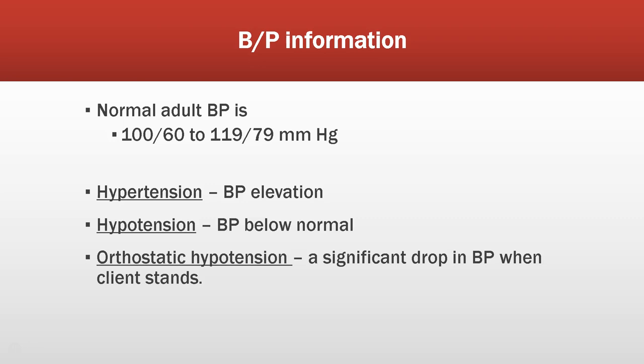Orthostatic hypotension is when a person stands up and their blood pressure drops significantly. To determine if someone has it, a three-point check may be done: blood pressure is taken while lying down, then sitting up, then standing. If there is a big drop in blood pressure, we need to be careful about changes in position so they do not black out or faint. Factors that can affect blood pressure include age, gender, heredity, diet, medication, pain, and the presence of disease.